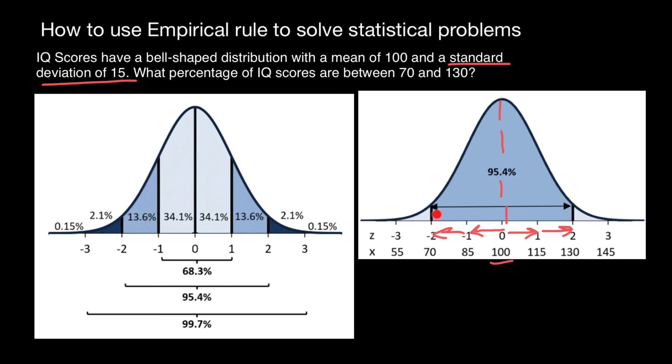And we have a score between 70 and 130. And from this graph on the left, we know that if we take two standard deviations from the mean, we should find 95.4% of the data, statistical data.